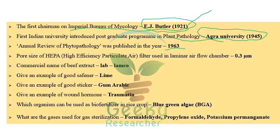Annual Review of Phytopathology was published in 1963. The pore size of the HEPA filter is 0.3 micrometer. HEPA stands for High Efficiency Particulate Air — this filter is used in laminar airflow chambers. The laminar airflow chamber was first developed by Whitfield. Inside the chamber, the HEPA filter ensures pure air output.